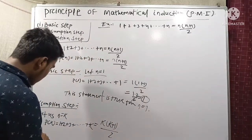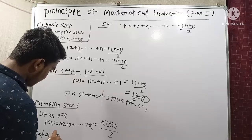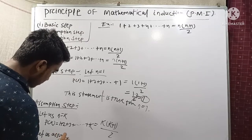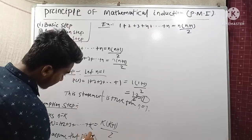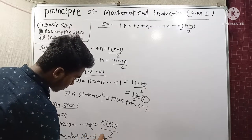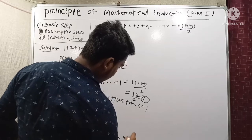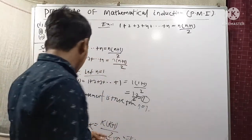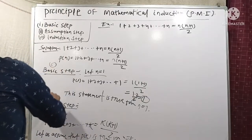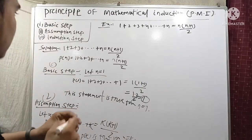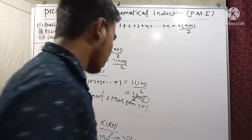Now it is n = k. Let us assume that P(k) is true for n = k. This brings us to the fourth aspect — now the third step, which is our Induction Step.